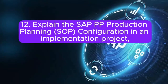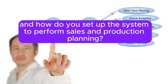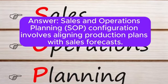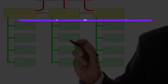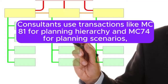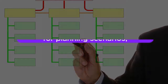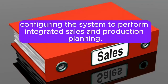Question 12: Explain the SAP PP production planning SOP configuration in an implementation project. How do you set up the system to perform sales and operations planning? Sales and operations planning (SOP) configuration involves aligning production plans with sales forecasts. Consultants use transactions like MC81 for planning hierarchy and MC74 for planning scenarios, configuring the system to perform integrated sales and production planning.